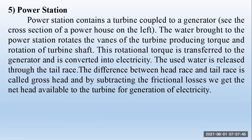The used water is released through the tail race. The difference between the head race and the tail race is called gross head. By subtracting the frictional losses, we get the net head available to the turbine for generation of electricity.